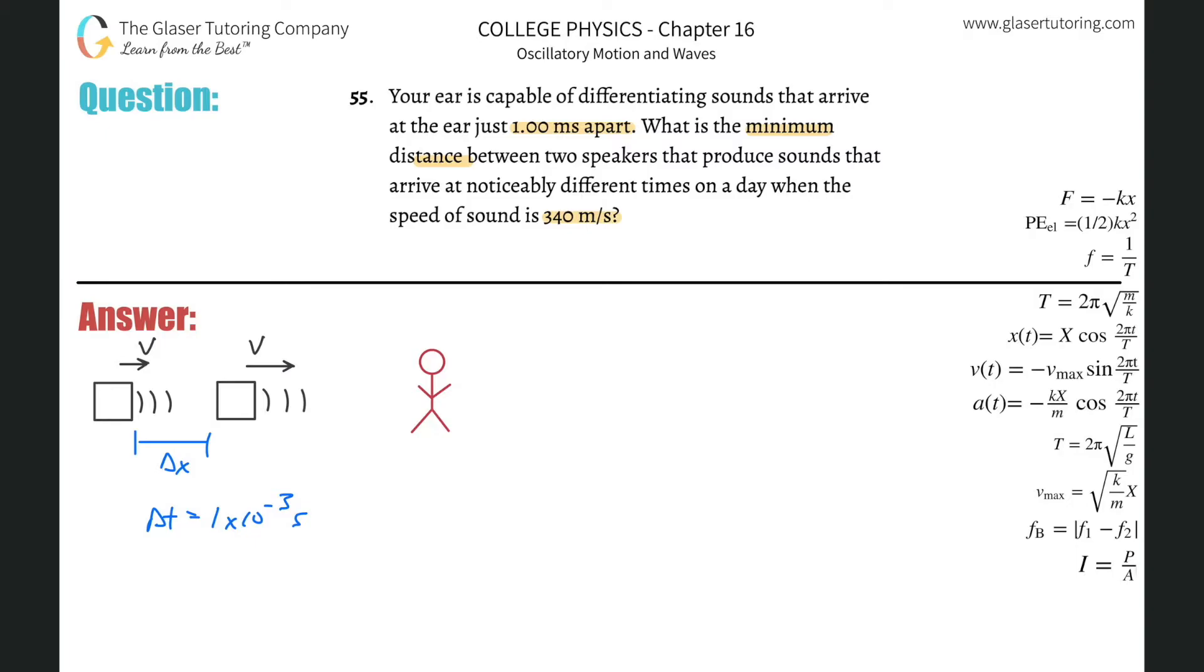So if we realize we're told the velocity, we're told the time, and we're asked for a distance. So how are they related? Velocity is equal to distance over time. Now specifically we can think about velocity being equal to the change in distance divided by the change in time.